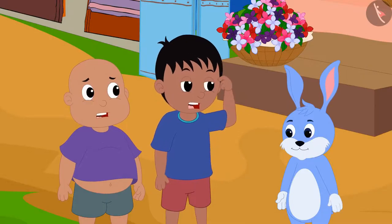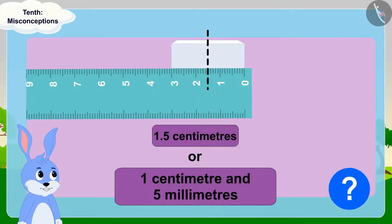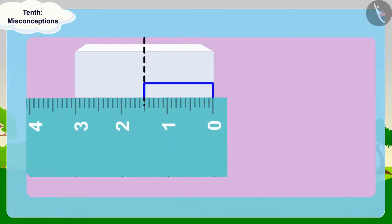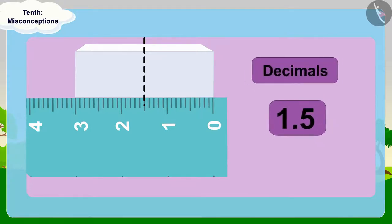Raju and Bablu could not understand anything. Children, is what Bunny said correct? Half of the eraser is 5 tenths more than a centimeter. So we can write it as 1.5 using decimals.